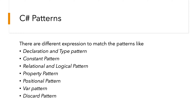C-sharp introduced pattern matching in version 7.0, and since then each major C-sharp version extends the pattern matching capabilities. The following C-sharp expressions and statements support pattern matching: is expressions, switch statements, and switch expressions, which were introduced in C-sharp 8 and extended further in C-sharp 9 and 10. We'll see all these things one by one in this video.